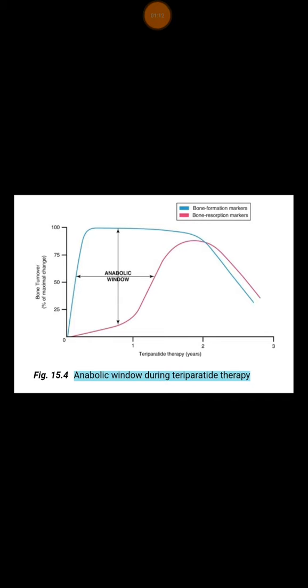As you can see here in this diagram, if you give teraparotide intermittently for 18 months to 2 years, then you will have this anabolic window which enhances bone formation. Teraparotide can be given up to 2 years but not after 2 years.